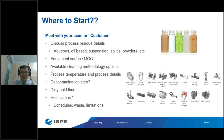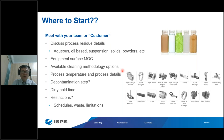Understand the available cleaning methodology — whether clean-in-place (CIP), clean-out-of-place (COP) with a parts washer, or manual cleaning. Manual cleaning is not preferable because it has more variability in terms of cleaning results. Know the process temperature and details, because temperature can affect soil characteristics. You need to understand the maximum temperature, duration, and what effect it has on the soil on your surface.